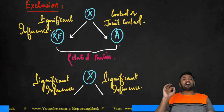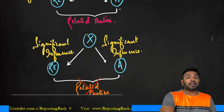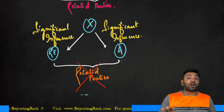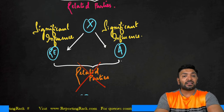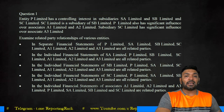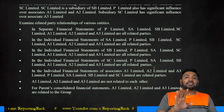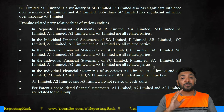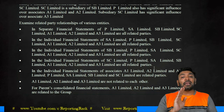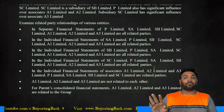If one entity has control or joint control and the other has significant influence, both parties are related. But if both have only significant influence from a common investor, their common associates cannot be considered related parties. Applying this logic: for P Limited, SA, SB, SC, A1, A2, A3 are all related. For associates A1, A2, A3, only P, SA, SB, SC are related — A1, A2, A3 are not related to each other.